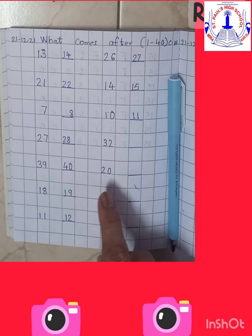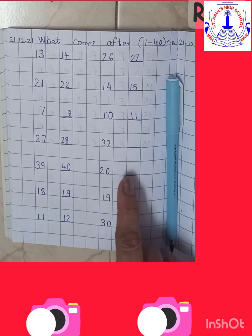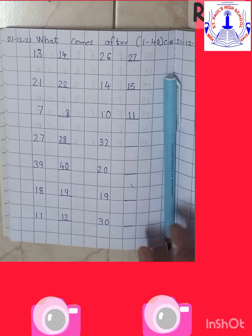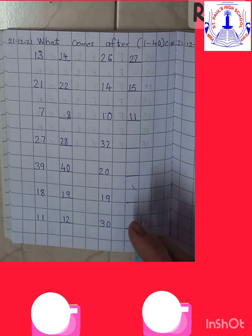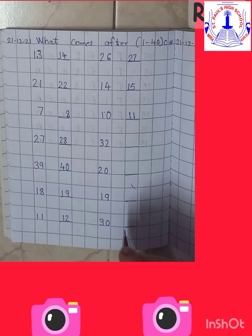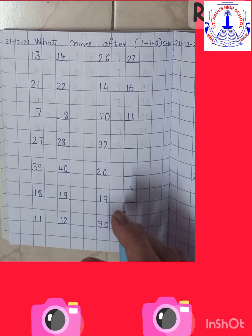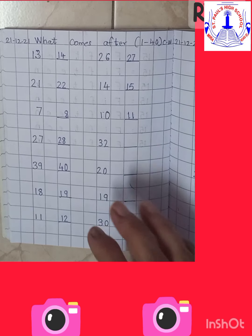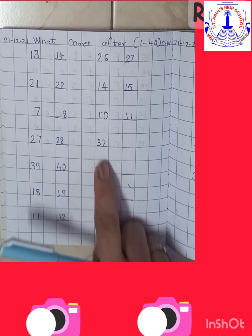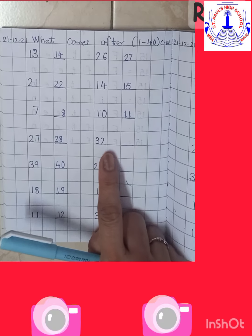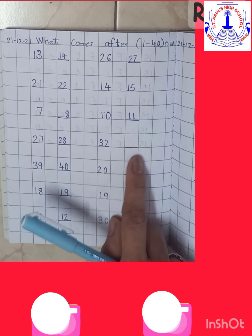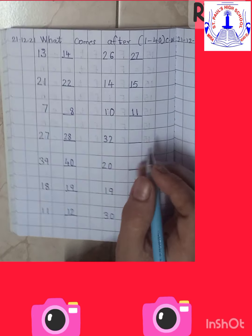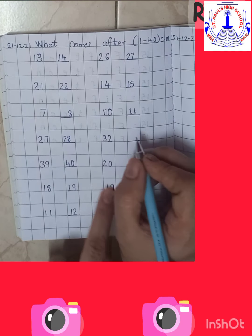Now number 32. So let's start from number 31: 31, 32. And what comes after 32? 33. So come on children, write 33.